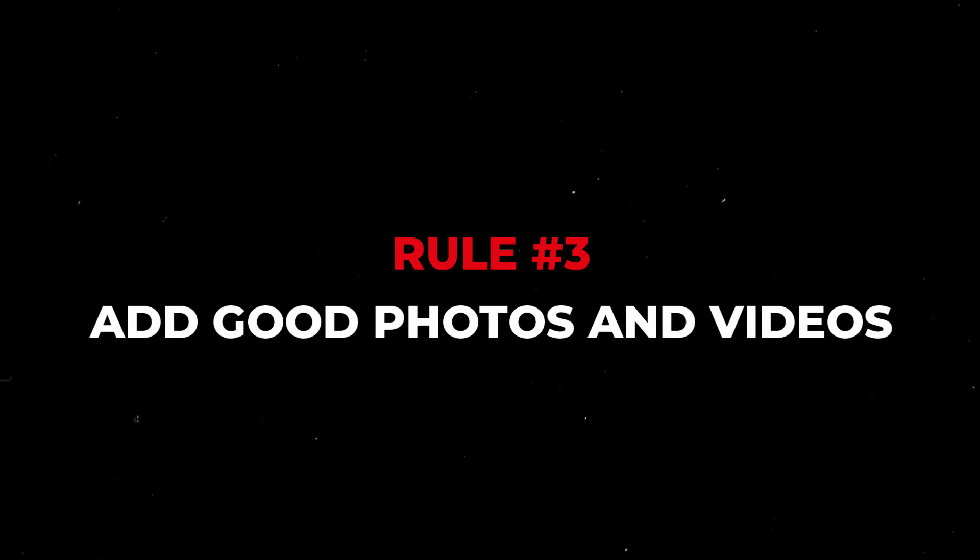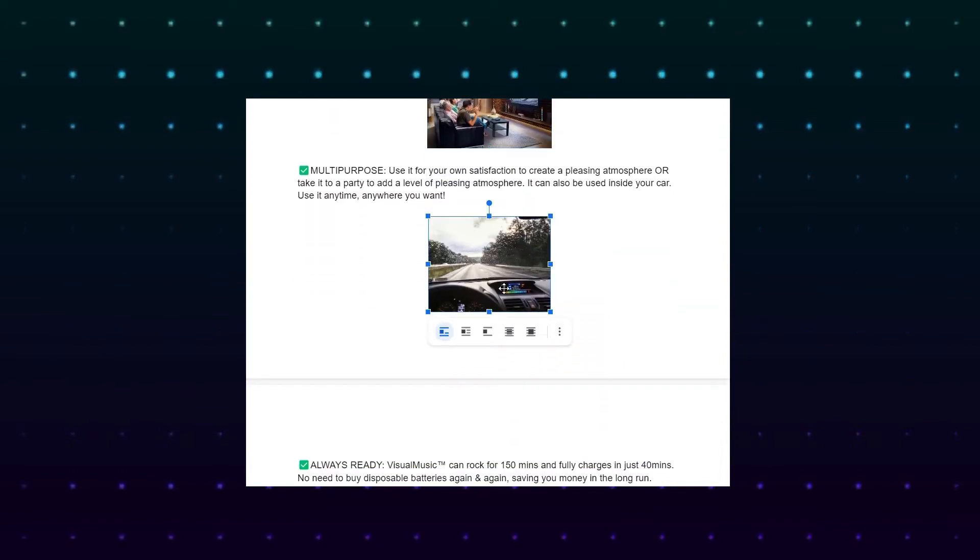Alright, now this takes us to the last point, which is to add good videos and good photos. When you make a product description, it is not just the text or words that matter — the images and videos you use also matter. You should not add images just for the sake of it, but add images that add value or show a different perspective of the product to the visitors. When you want to buy something online, you want to feel the product before you buy it. So you need to have photos that show the product from different angles — from the side, front, upper view, lower view. Also, add photos which show the product in action.